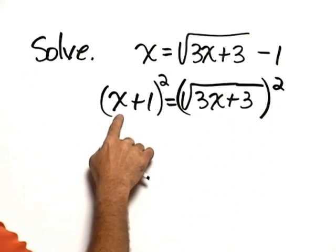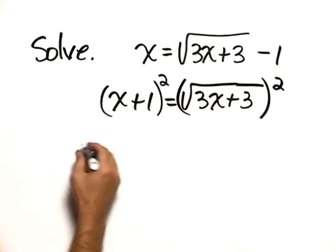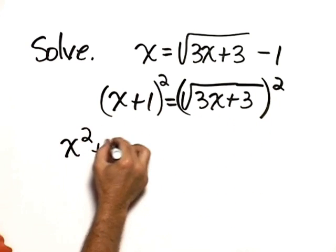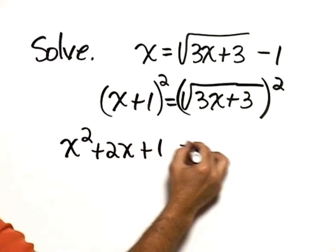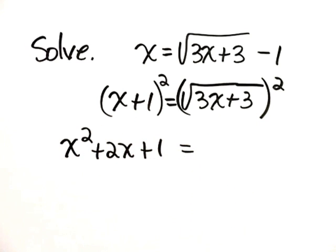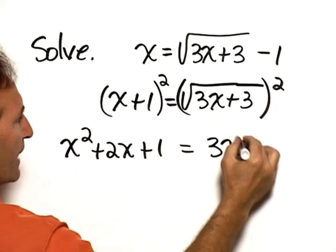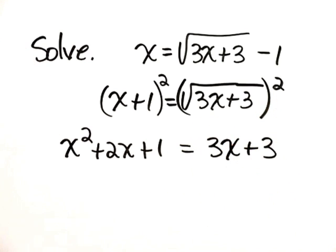On the left-hand side, we're going to expand this binomial squared. It becomes x squared plus 2x plus 1. And on the right-hand side, we have a square root squared. So we just get the radicand, 3x plus 3.